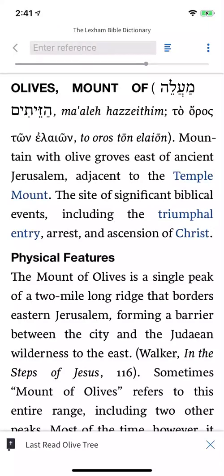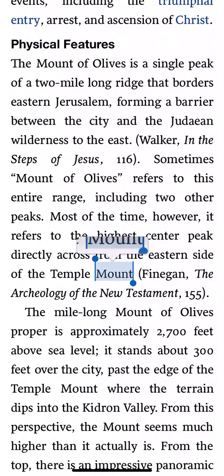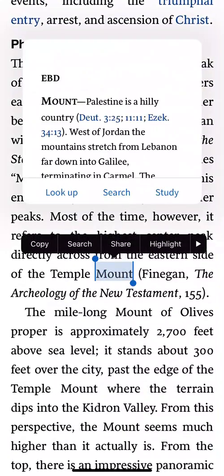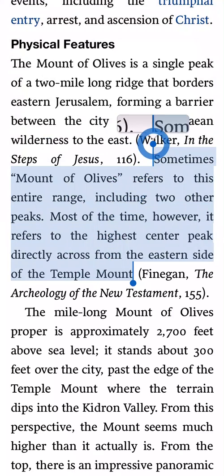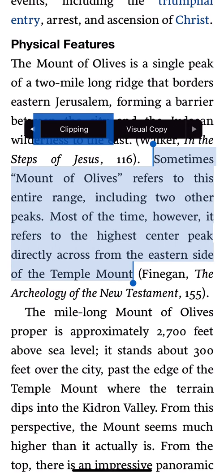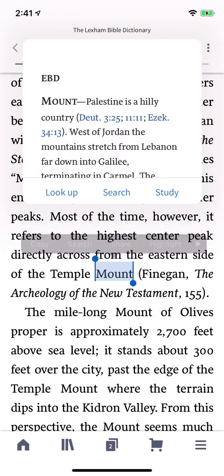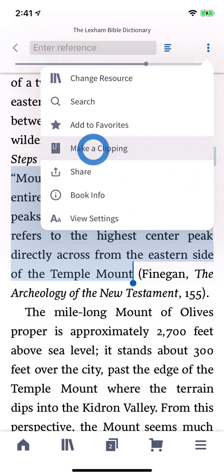To create a clipping, select text in any resource by tapping and holding. To select more than one word, drag the blue handle that appears to span your desired text. You can add a clipping from the selection menu — just tap the right arrow and then Clipping — or from the Actions menu, tap Make a Clipping.